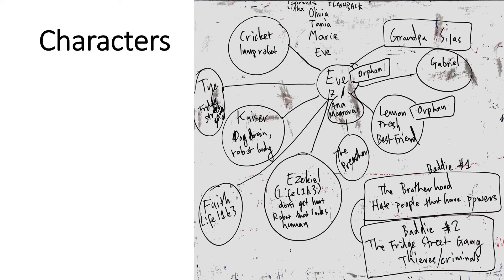In terms of characters, Eve is in the middle — she's the main character, a 17-year-old. At the top are characters mentioned in the flashbacks. Cricket is a little robot. Chai is a member of the Fridge Street Gang, one of Eve's enemies. Kaisa is her dog with a dog brain. Faith, Gabriel, and Ezekiel are other characters that will come up later. Lemon Fresh is her best friend, and the Preacher is someone trying to chase Eve. Grandpa Silas is her grandpa.